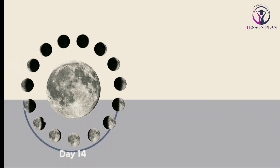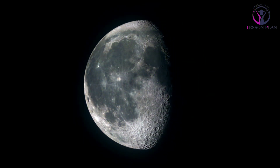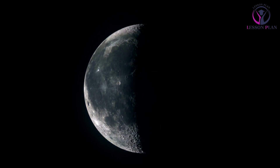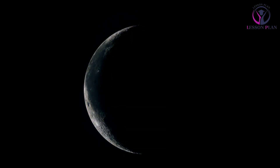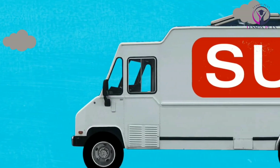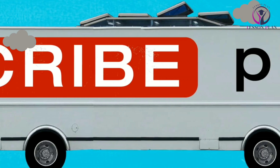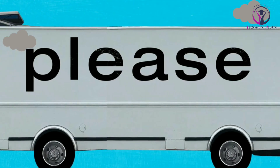After the full moon, the illuminated portion gradually decreases until we see another new moon at the end of the lunar month. The exact appearance of the moon during each phase depends on the angle at which the sun's light hits the moon and the relative positions of the sun, earth, and moon. The moon's phases are caused by the relative positions of the earth, sun, and moon — by understanding these phases, we can better appreciate the beauty of the night sky.